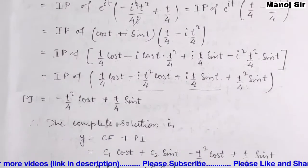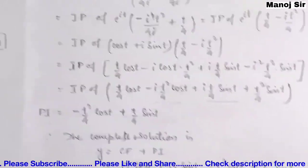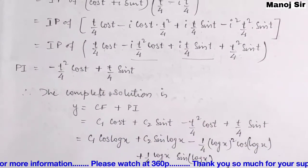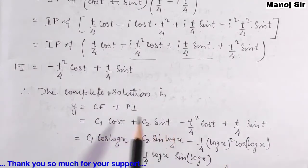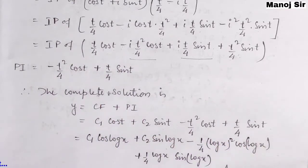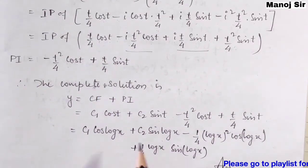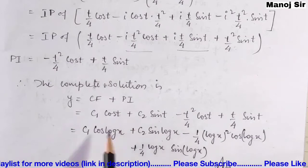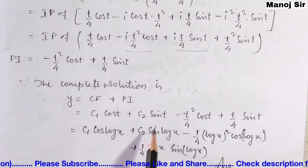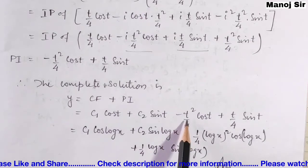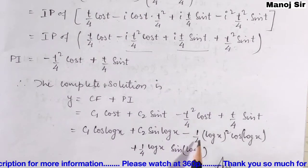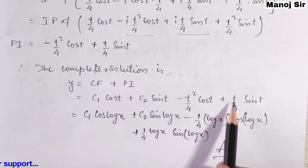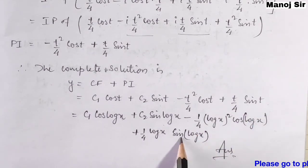Finally, the complete solution is y = CF + PI = c₁cos(t) + c₂sin(t) − t²/4·cos(t) + t/4·sin(t). Replacing t with log(x): y = c₁cos(log x) + c₂sin(log x) − (log x)²/4·cos(log x) + (log x)/4·sin(log x). This is the final answer.